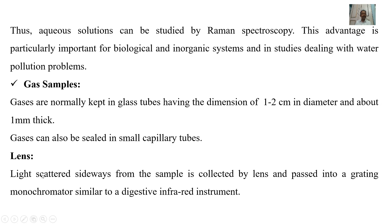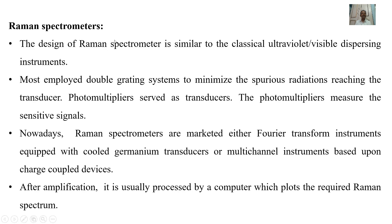Light scattered sideways from the sample is collected by a lens and passed into a grating monochromator similar to a dispersive infrared instrument. The design of the Raman spectrometer is similar to classical ultraviolet-visible dispersing instruments. Most employ double grating systems to minimize spurious radiation reaching the transducer. Photomultipliers serve as the transducer and measure the sensitive signals. Nowadays, Raman spectrometers are marketed either as Fourier transform instruments equipped with cooled germanium transducers, or multichannel instruments based upon charge-coupled devices. After amplification, the signal is usually processed by a computer which plots the required Raman spectrum.